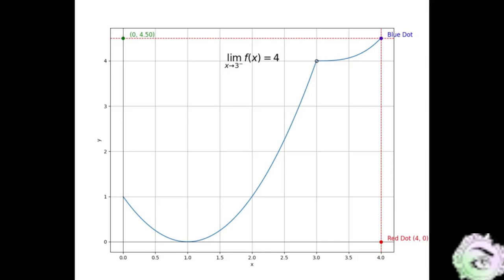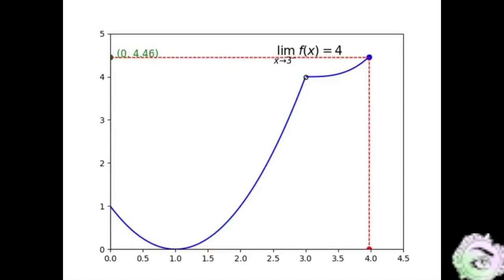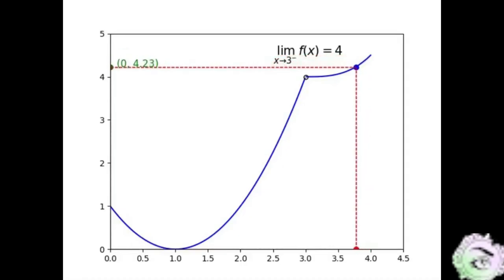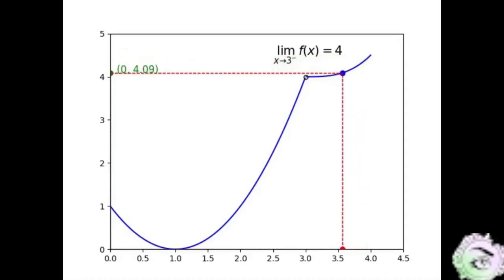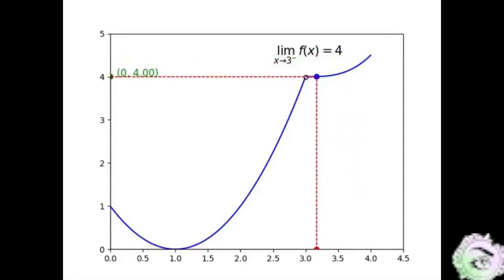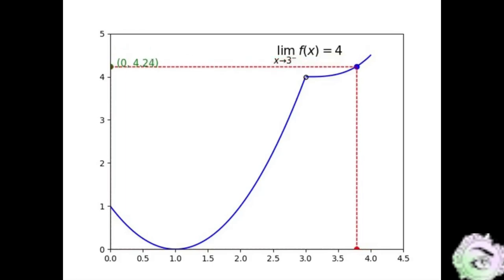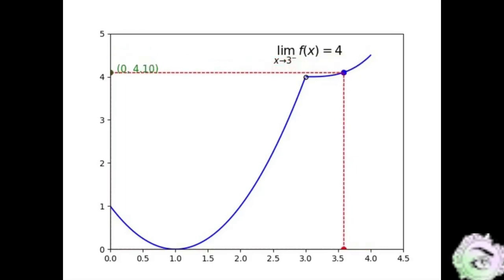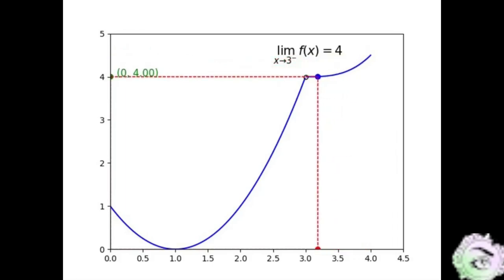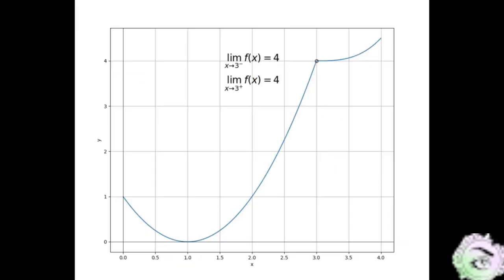Let's observe the movement of the y-coordinate as x moves toward 3 from the right. We can see that as x moves towards 3 from the right, y moves towards 4. Therefore, we conclude that the right limit of f at 3 is 4. We denote it in symbols as: lim as x approaches 3 from the right of f of x equals 4.